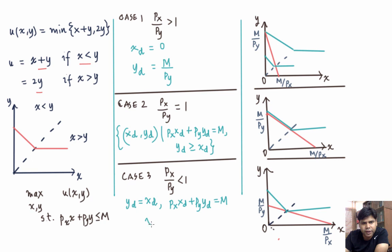Solving them we are going to get xd equals m by px plus py, and yd equals m by px plus py.